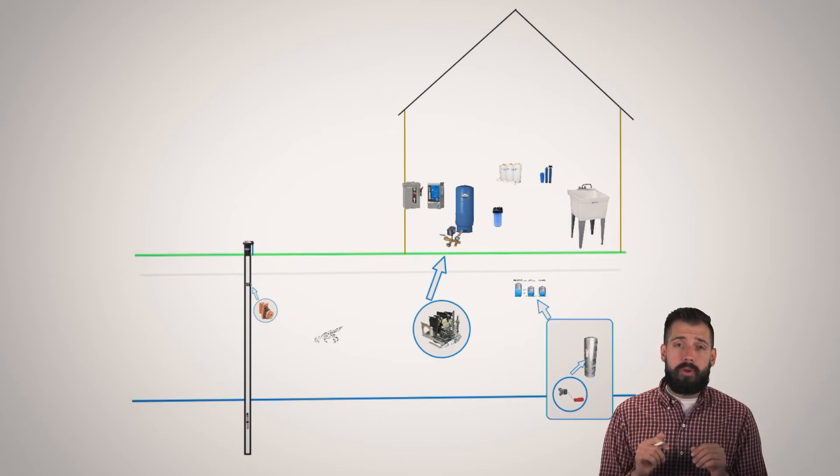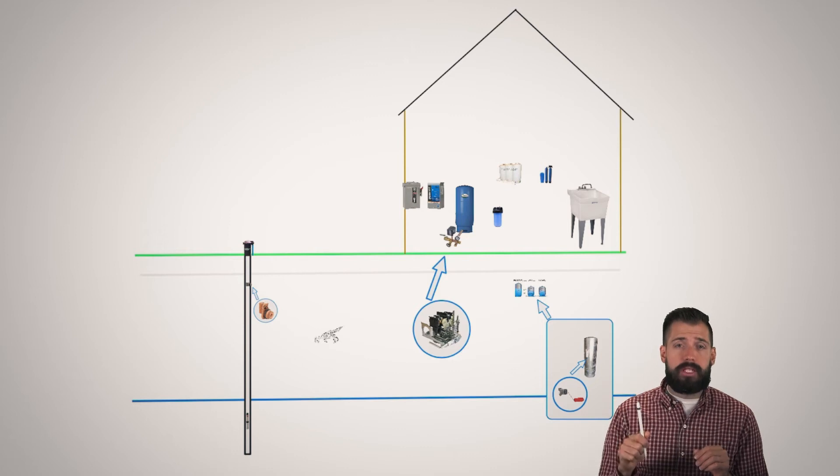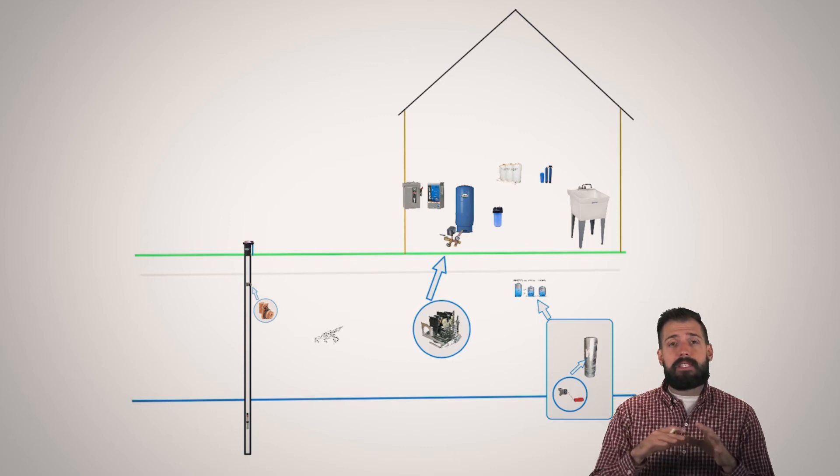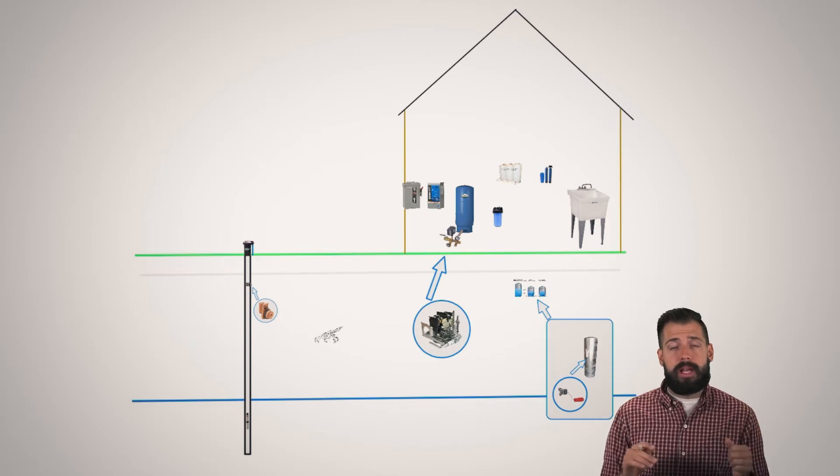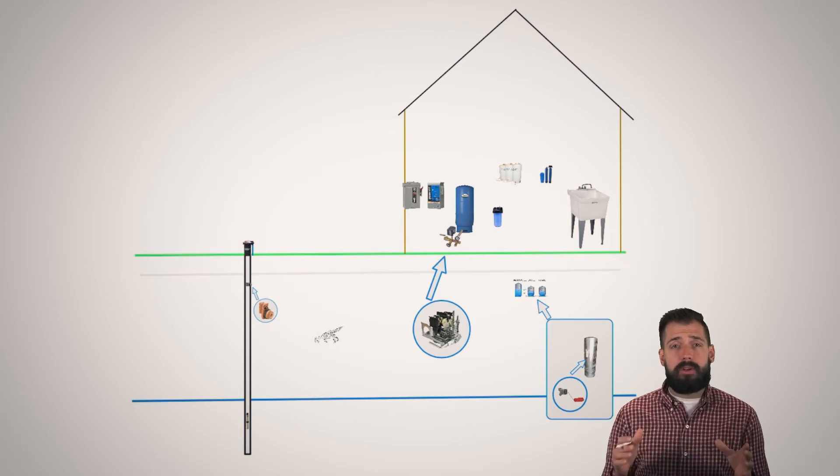Now, sometimes there are communal wells where a large well is drilled and that supplies water to an entire community. So we can either have a public water supply, we can have a small community HOA type of water well, or we can have a private water well. But in general, they all work about the same.